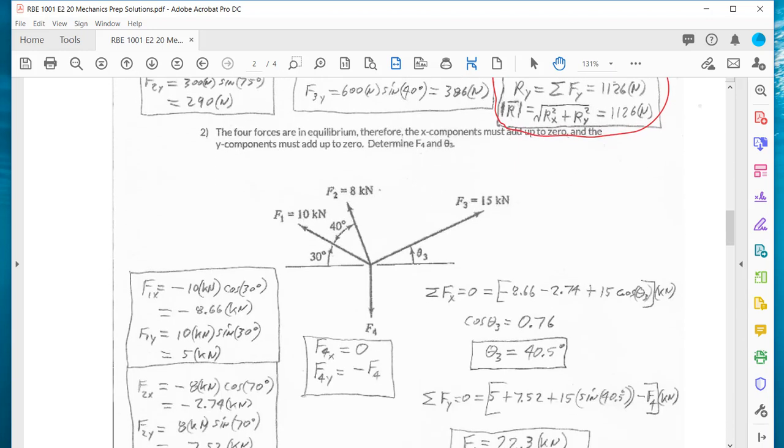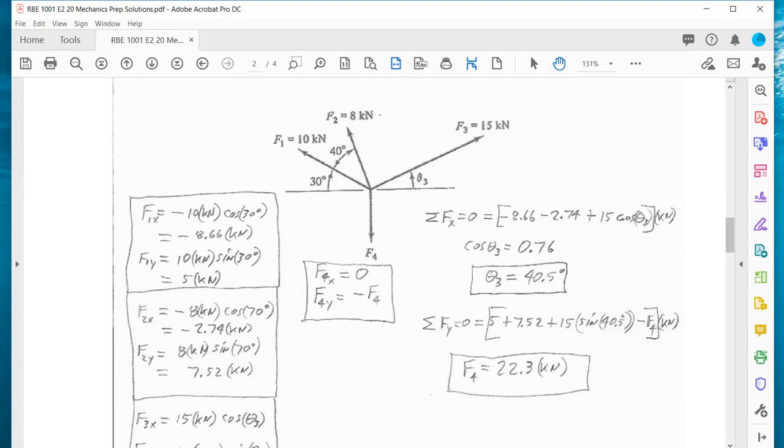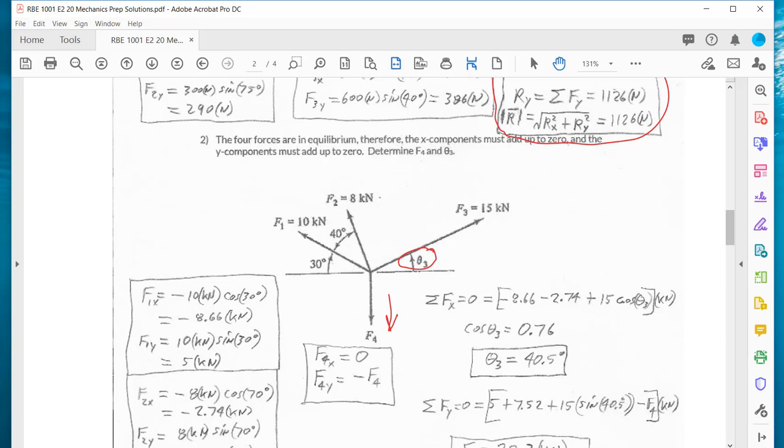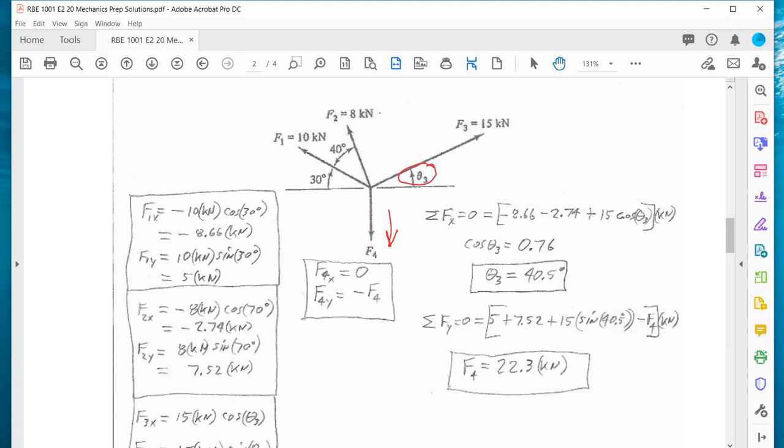In this problem we know the direction of F4, it's just pointing straight down. We know the magnitude of F3 but we don't know the angle. The question said determine F4 and theta3 assuming these four forces are in equilibrium. In other words, assuming that they add up to zero. These are all the forces acting on some point mass and it's not accelerating so they have to add up to zero.